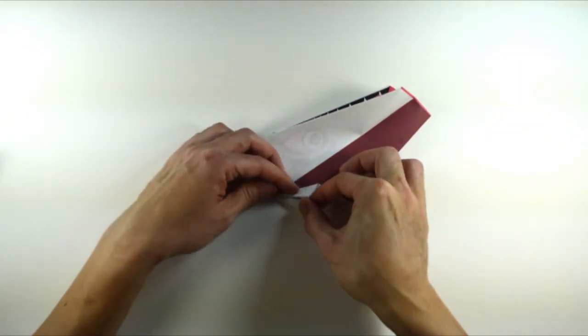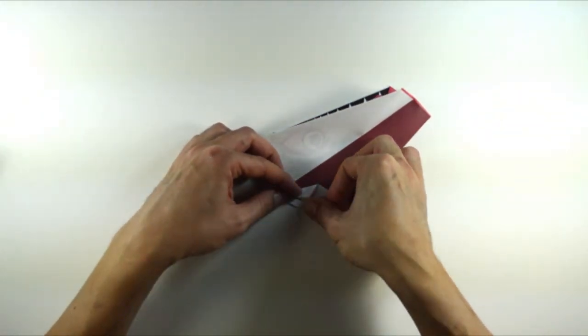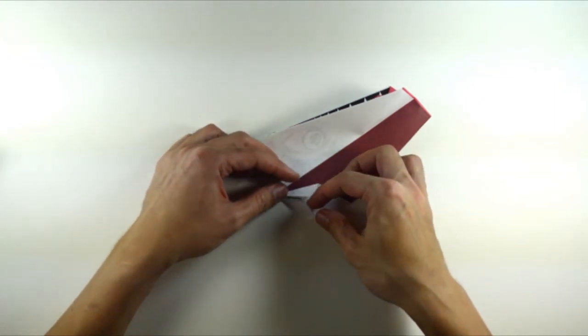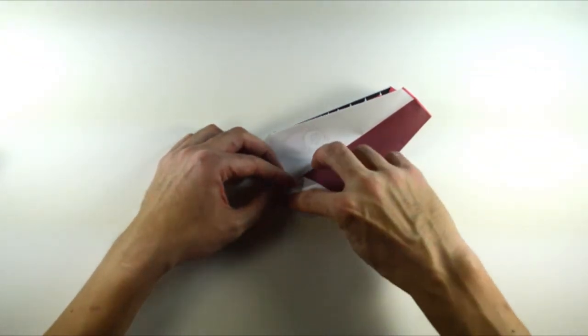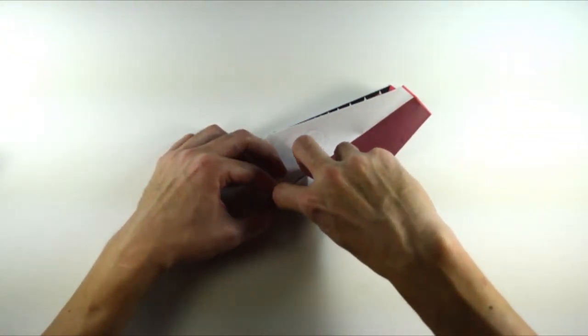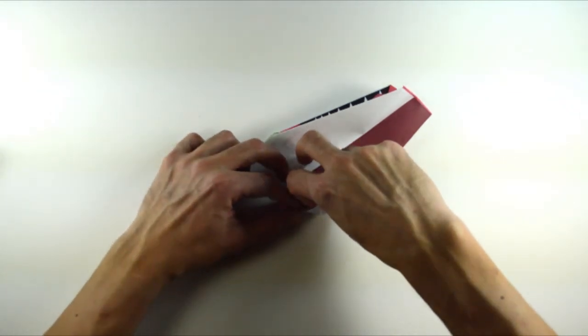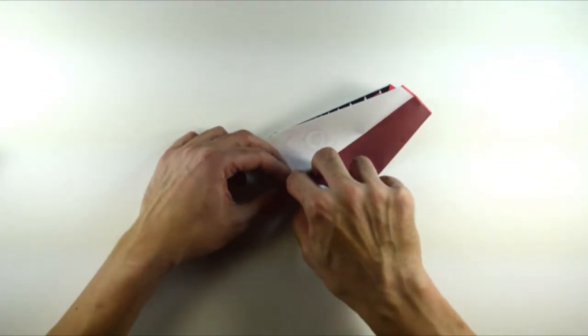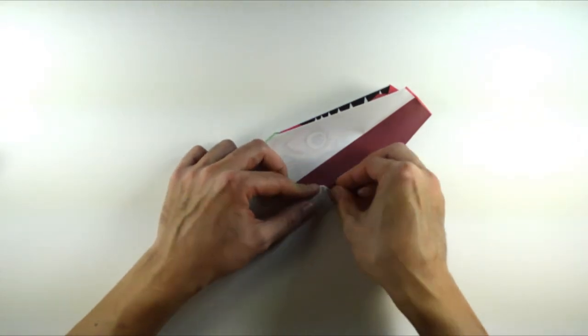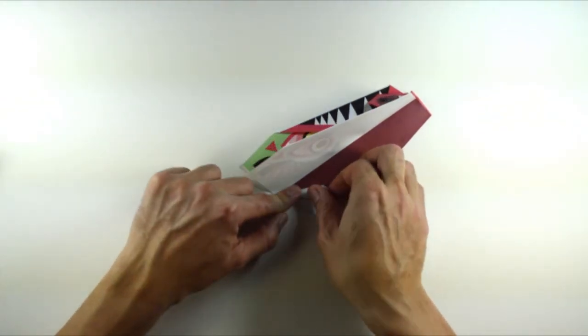Then, this forms a diamond. Unfold, and pull the pocket down to form a short pointy flap.